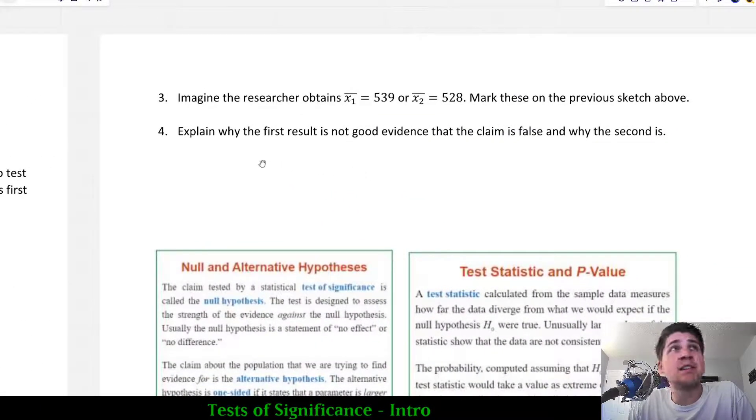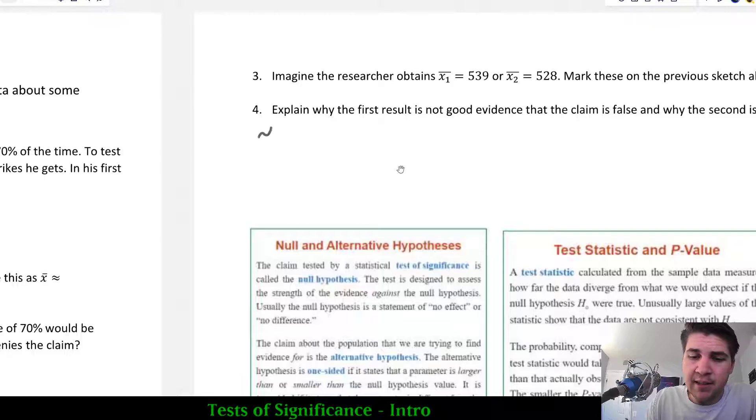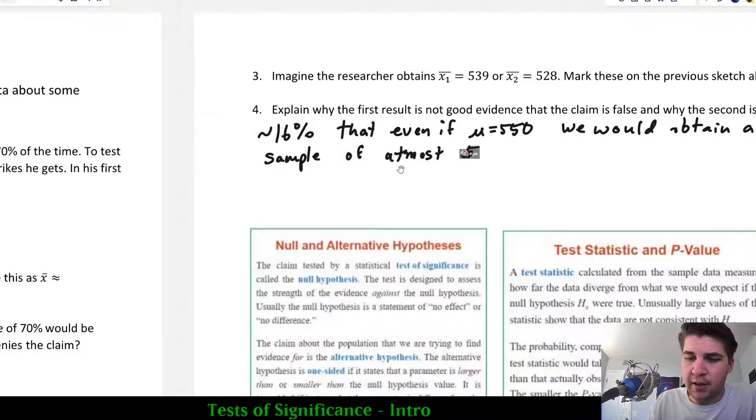If we look at the final question of this example, it says explain why the first result is not good evidence that the claim is false and why the second is. In the first case, let me go ahead and write out what I'm saying: there's approximately a 16% chance that even if mu equals 550 were true, we would obtain a sample of at most 539.